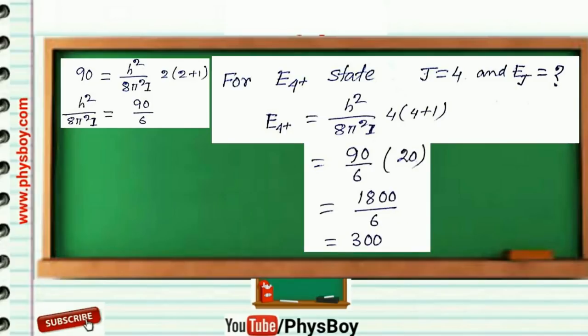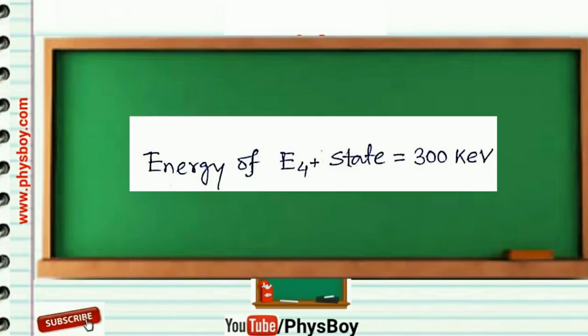So by putting the value of this term and simplifying this, we get 300. So energy of E4+ state of the molecule is equal to 300 keV.